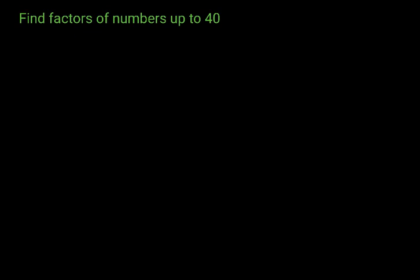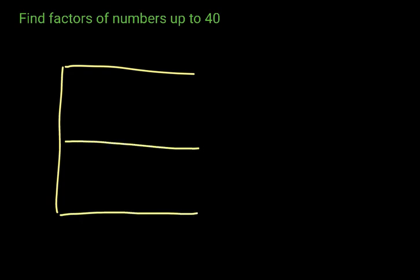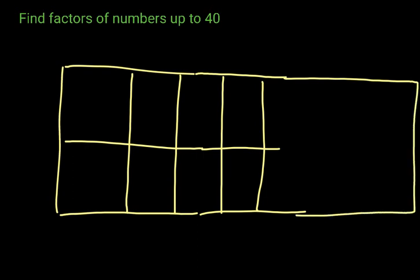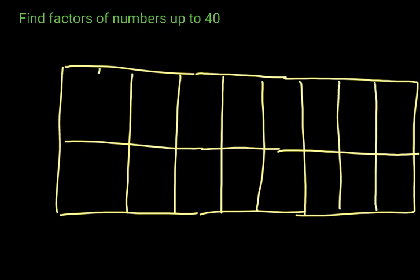So for example, if I draw a grid, we have here 18 squares. If I wanted to know what the factors of 18 are, I would just say what two numbers multiplied together give me 18, and those numbers would be the factors.